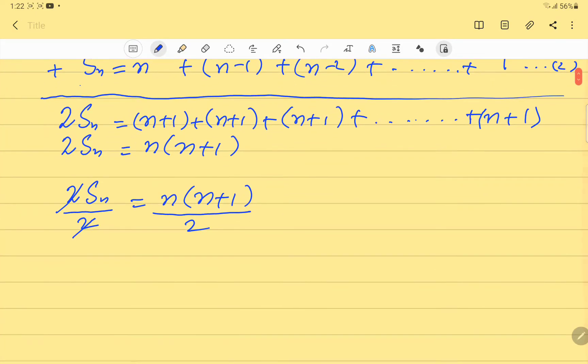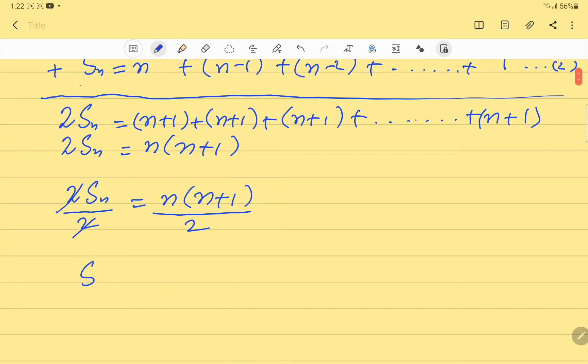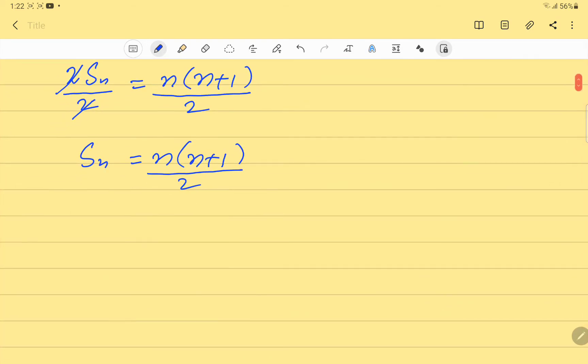This 2 cancels with that 2, giving S_n equals n(n+1)/2. But S_n equals 1 plus 2 plus 3 up to n, so 1+2+3+...+n equals n(n+1)/2.